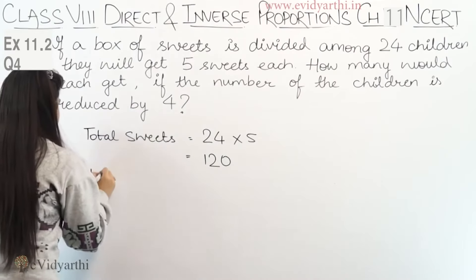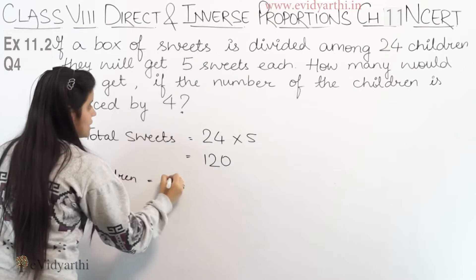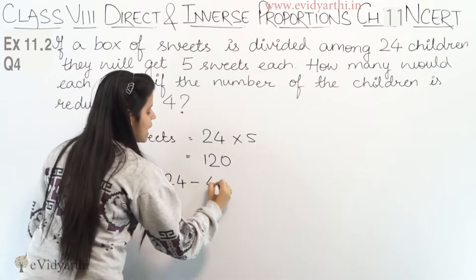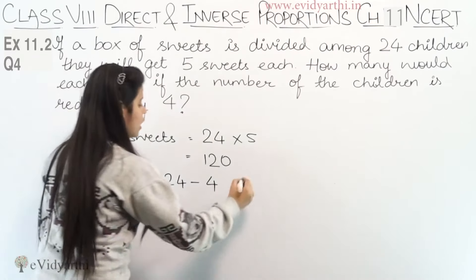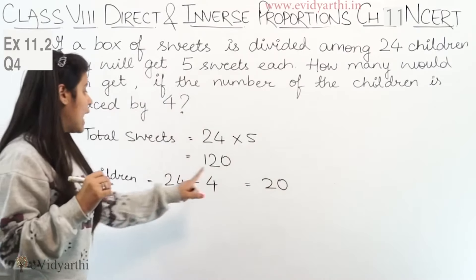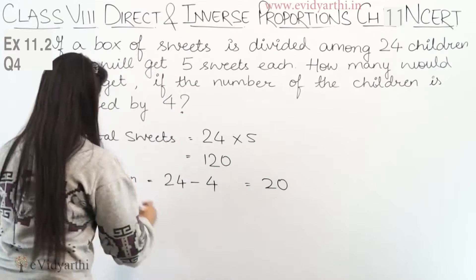Now the children which we reduce by 4 gives us 20 children. So you distribute these 120 sweets to 20 children.